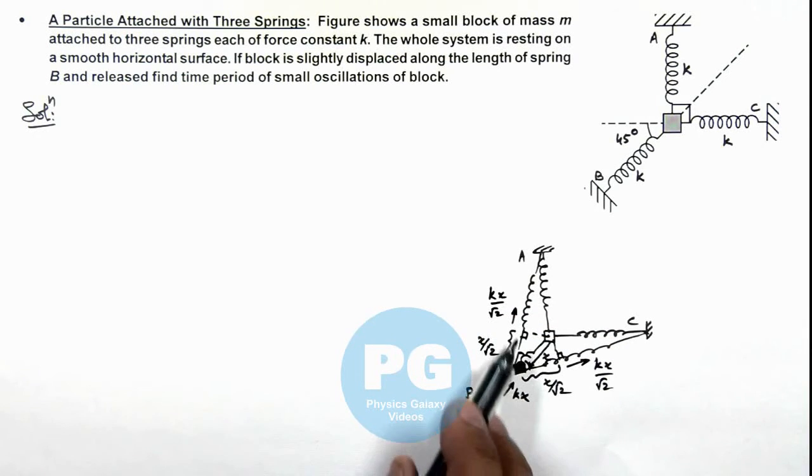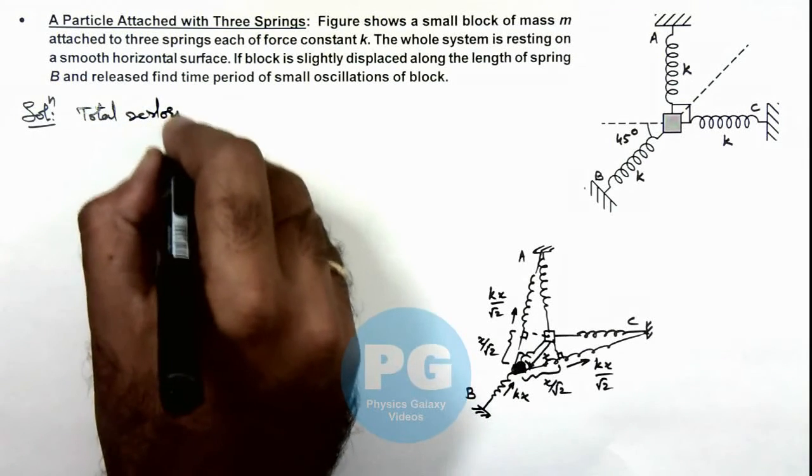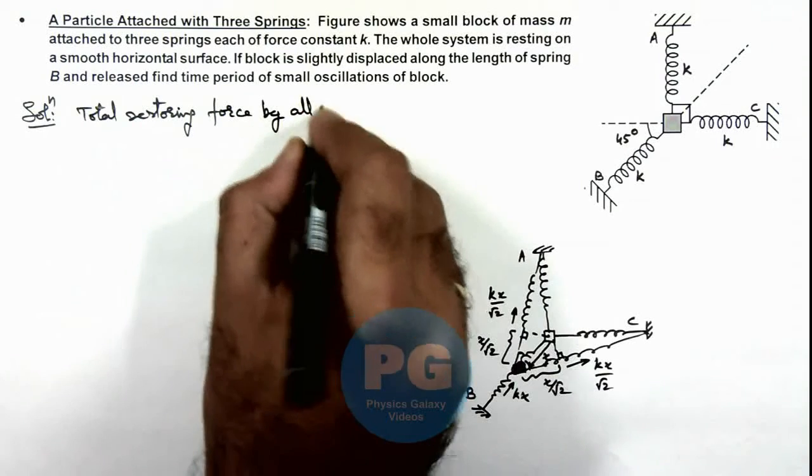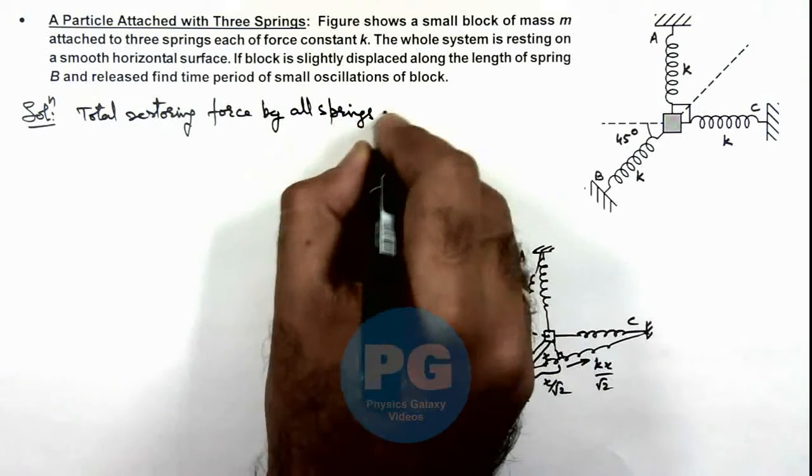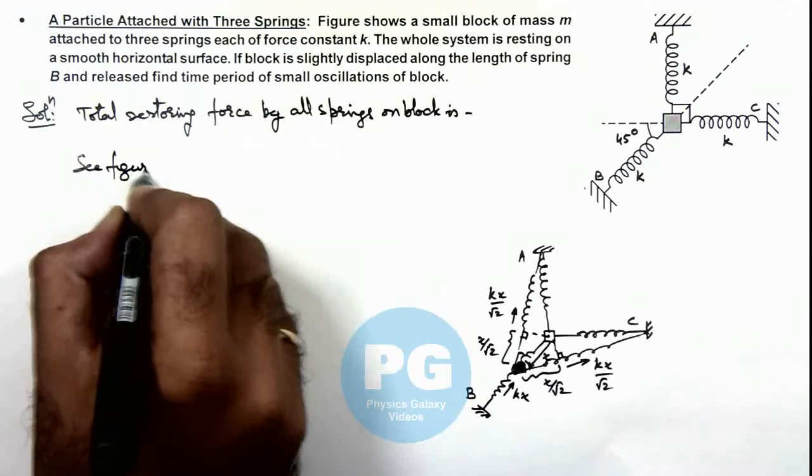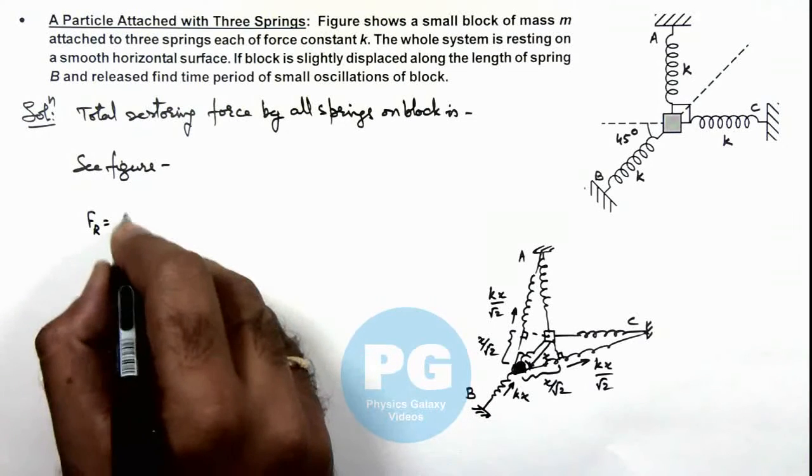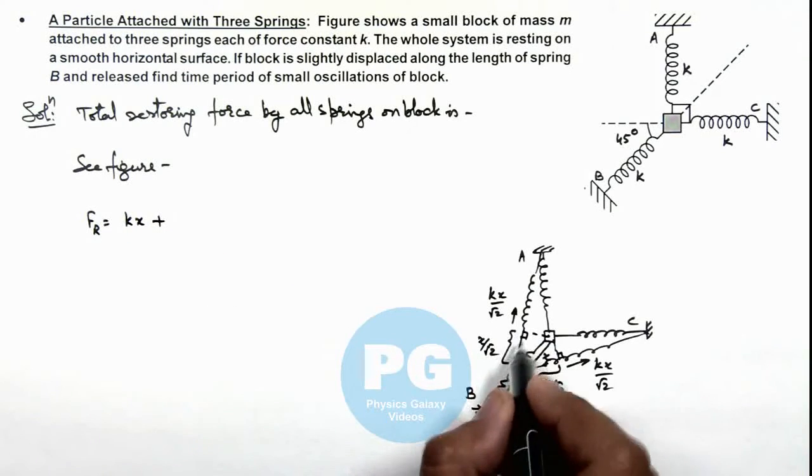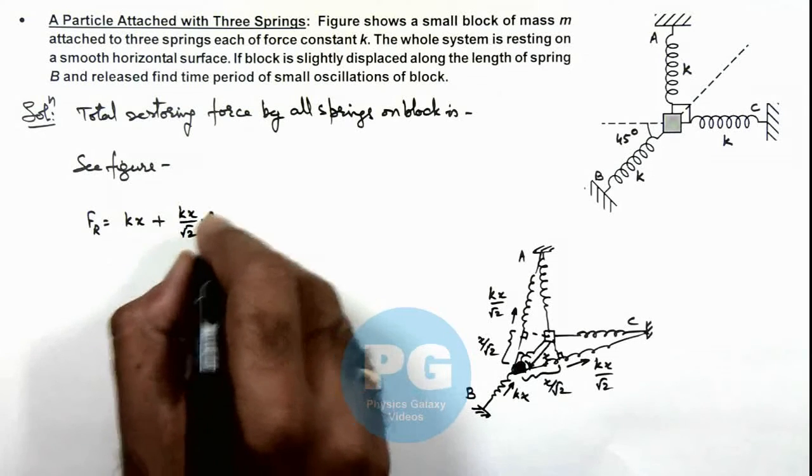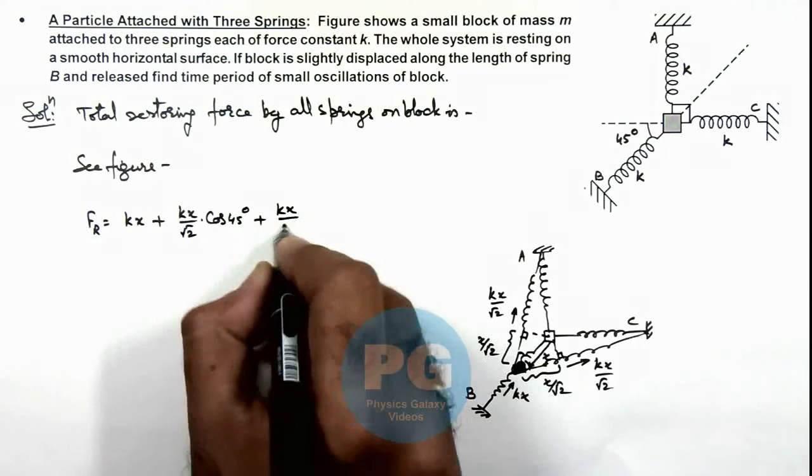We can find the total restoring force by all springs on the block. The total restoring force acting on the block: due to spring B it is kx, plus due to spring A it is (kx/√2)cos45°, which is kx/2, plus due to spring C it is also (kx/√2)cos45°, which is kx/2.